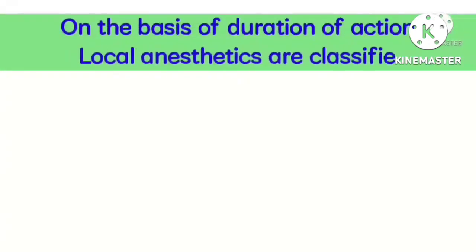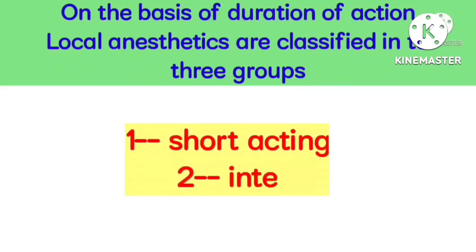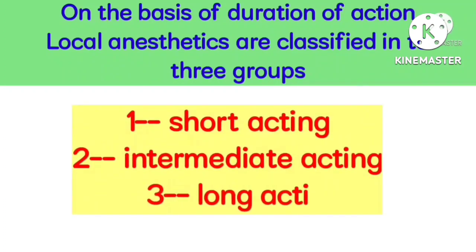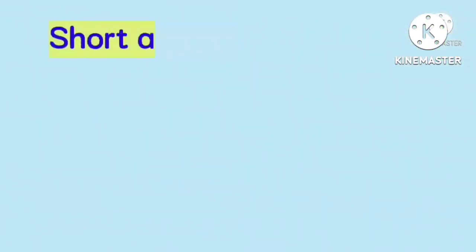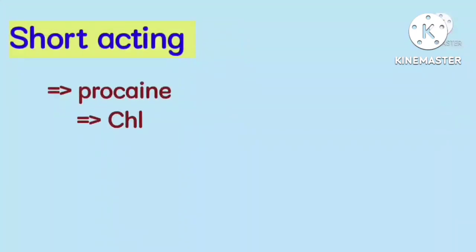On the basis of duration of action, local anesthetics are classified into three groups: short acting, intermediate acting, and long acting. Short acting agents are procaine and chloroprocaine.